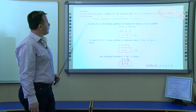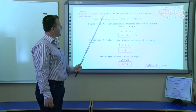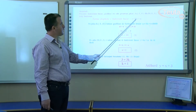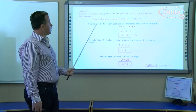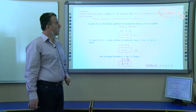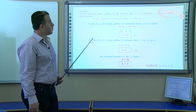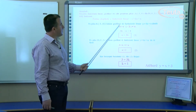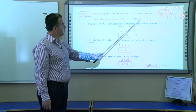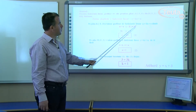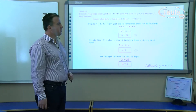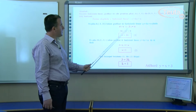Të vizohet grafiku i këtij funksioni. Kemi thënë që forma eksplicite e funksionit linear është y = kx + n. Pika A me koordinata (-3, 0) i takon grafikut të funksionit linear y = kx + n. Zëvendësojmë koordinatat e x dhe y: y = 0, x = -3. Pra 0 = k·(-3) + n, që jep -3k + n = 0.